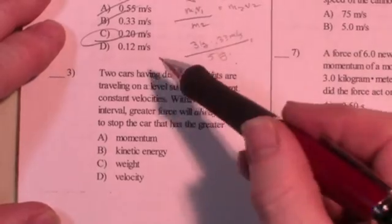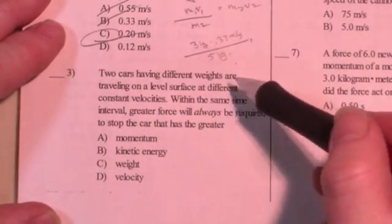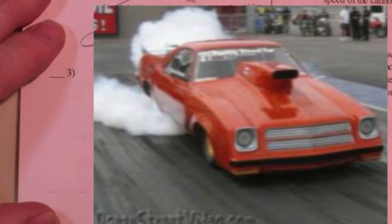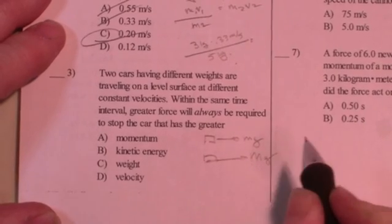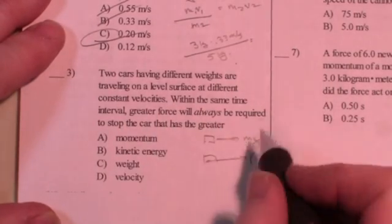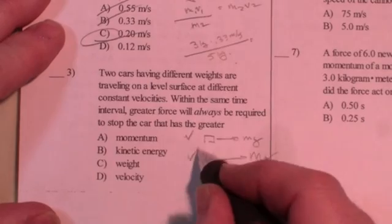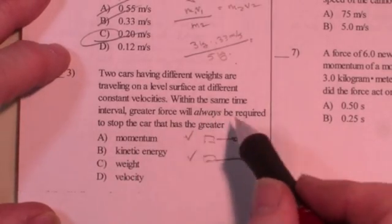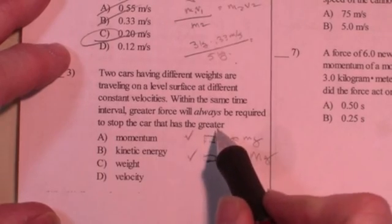The third problem, two cars having different weights are traveling on a level surface at different constant velocities. All right, so let me think about this. I have two different weights, so MG is different. This car is going to have a bigger M, same G. And they're traveling at constant velocities. So they're traveling at V, V. Within the same time interval, greater force will always be required to stop the car that has the greater.